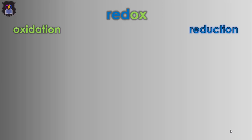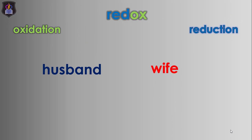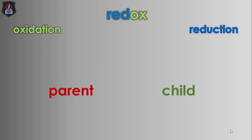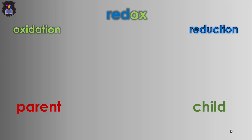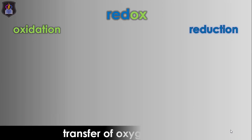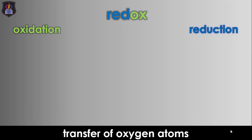Examples of opposite and complementary words are give and take, husband and wife, parent and child, etc. In this tutorial, we'll be seeking to identify and define oxidation and reduction using five different concepts. The first concept we'll be looking at is the transfer of oxygen atoms.